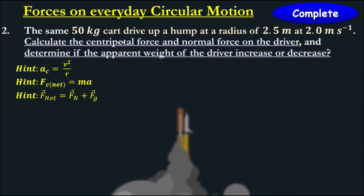Let's try another one. We have the same 50 kg cart drive up a hump. The car is up here. Now in this case, the centripetal force is pointing down, the gravitational force is also pointing down, and then we have our normal force pointing up still. Same scenario, but our centripetal force is in the opposite direction from the last question.